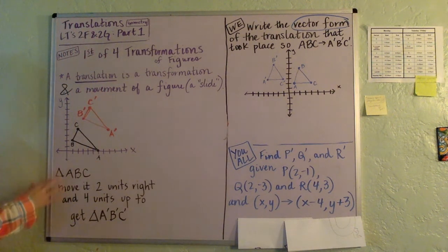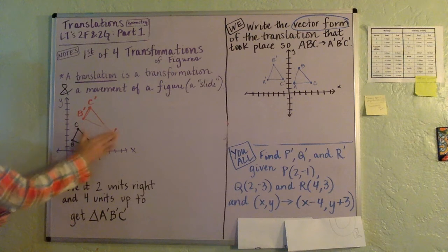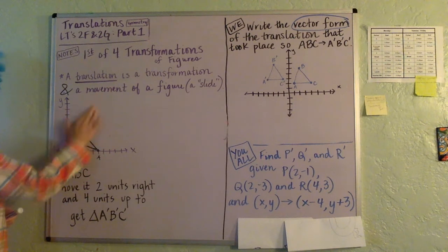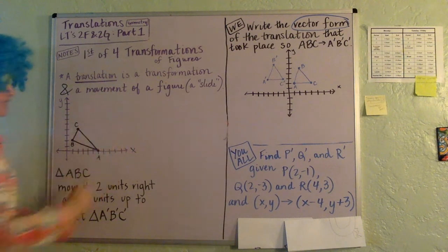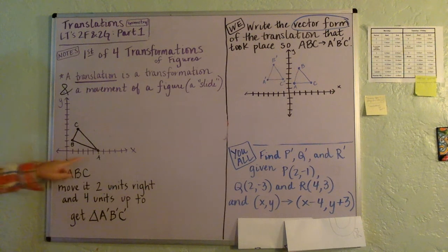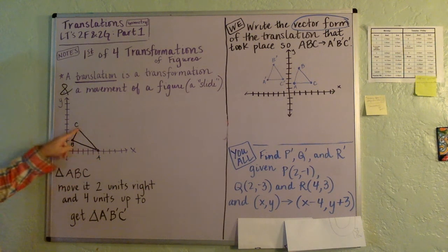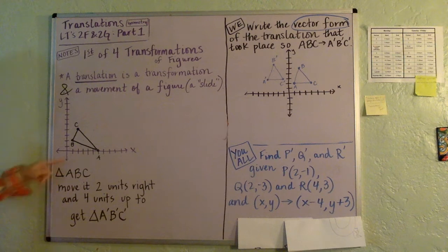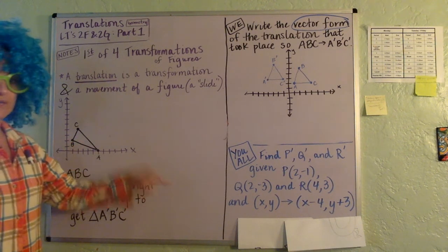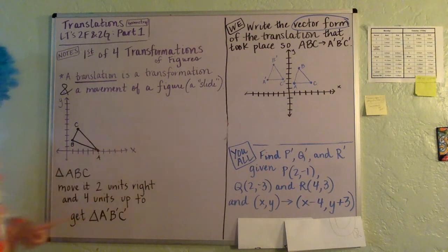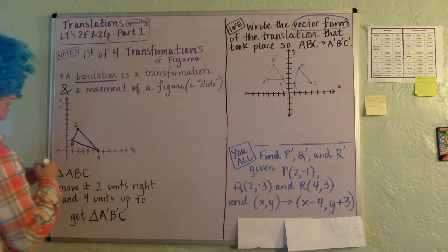And so you can see here if we start out with, oh shucks, I was practicing too soon. If we start out here with triangle ABC, so A is here, B is here, C is here, triangle ABC. And let's say we want to move it so that it's two units to the right and four units up, okay? So that we get the new triangle, we get the triangle shifted over.